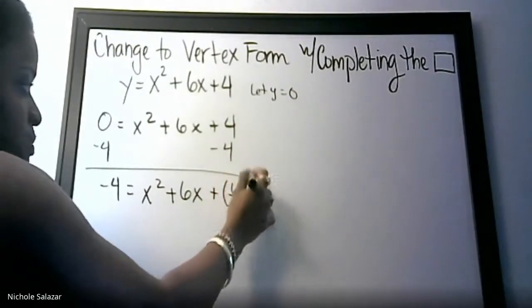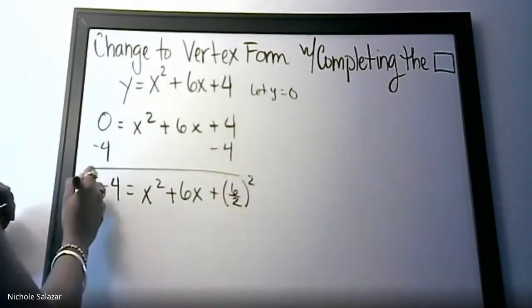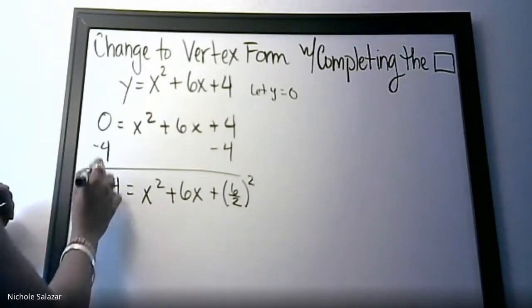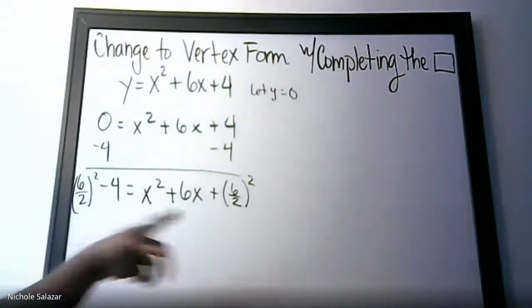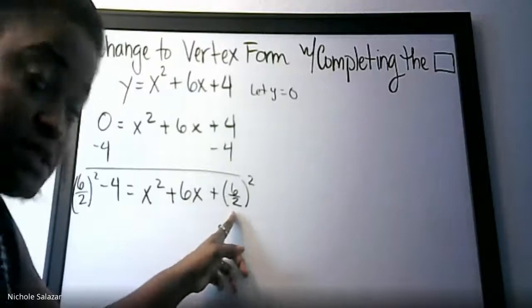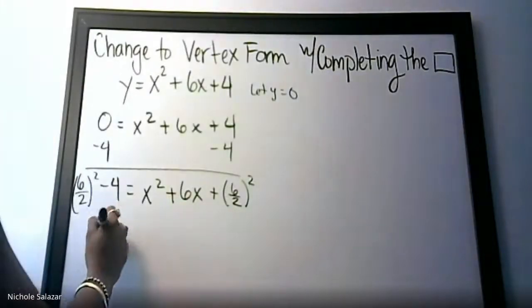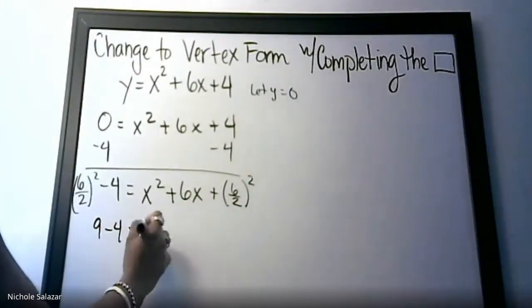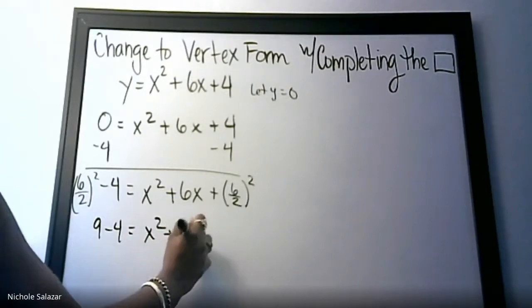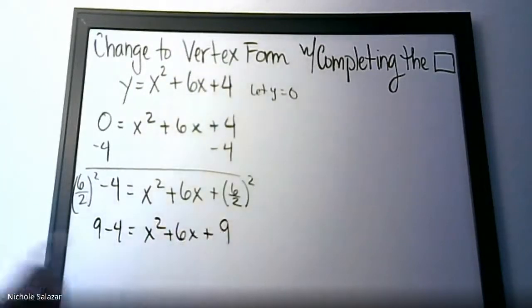So we do 6 over 2, square. You do that to both sides. 6 divided by 2 is 3, and 3 squared is 9. So now we have 9 minus 4 equals x squared plus 6x plus 9.